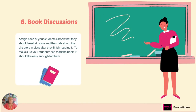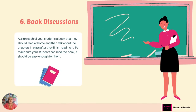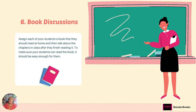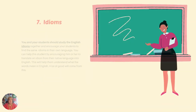Number six: book discussions. Assign a book to your students to read — something that is age-appropriate — and have them completely read the book at home. They can then come back to class and give an oral report on what they have read. This will get them speaking and will also show whether they comprehend what they're reading.